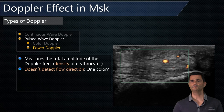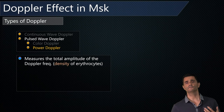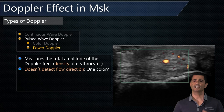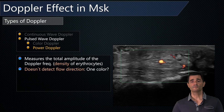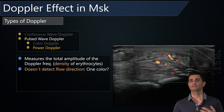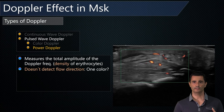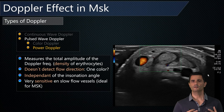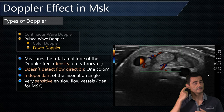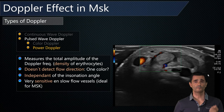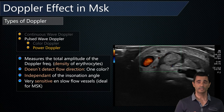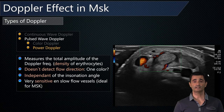Power Doppler measures the total amplitude of the Doppler signal. It is a measure of the density of erythrocytes — essentially the intensity of the flow. It usually does not detect flow direction, so you typically have only one color when using power Doppler, although newer machines can display two colors by analyzing both power and color Doppler simultaneously. Power Doppler is independent of the insonation angle and is more sensitive for detecting slow flow in small vessels, making it the ideal type of Doppler for musculoskeletal ultrasound.